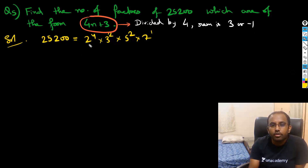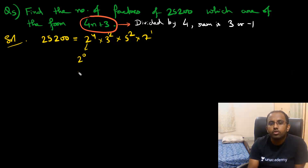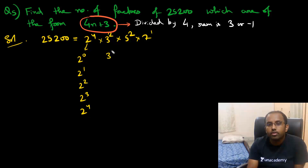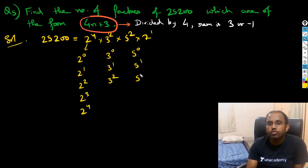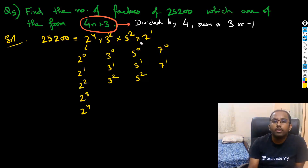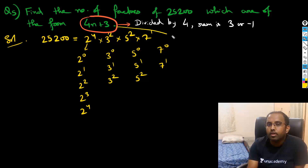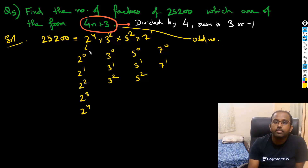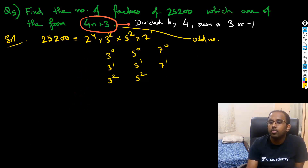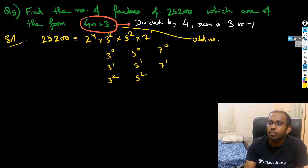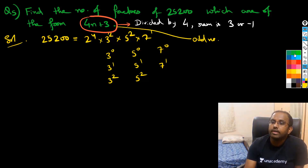Let me list out all the factors: 2 raised to 0, 2, 2 squared, 2 cubed, 2 raised to 4; then 3 raised to 0, 3, 3 squared; then 5 raised to 0, 5, 5 squared; and 7 raised to 0, 7. Now, 4n plus 3 is always odd, so I don't need to consider the powers of 2 at all — they will always make the number even. And 2 raised to 0 is 1, so multiplying by 1 doesn't change anything either.